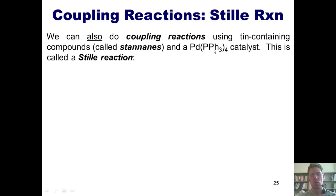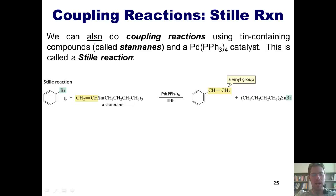That's what this catalyst is called. This type of reaction is called a Stille reaction. In this example, I can take a phenyl bromide and react it with a stannane. Note that tin is typically attached to three butyl groups and then some other group.